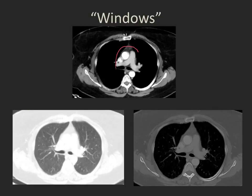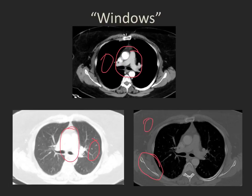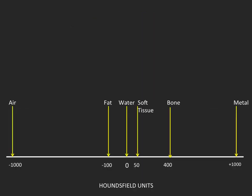For example, here we are looking at soft tissues of the mediastinum, but we cannot see the lung. We can see the lung on the lung window, but we can't see the mediastinum. And we can see the bones here, but we really don't see the soft tissues or the lung very well. This is because of the wide range of densities of the soft tissues which are found on the average CT scan.